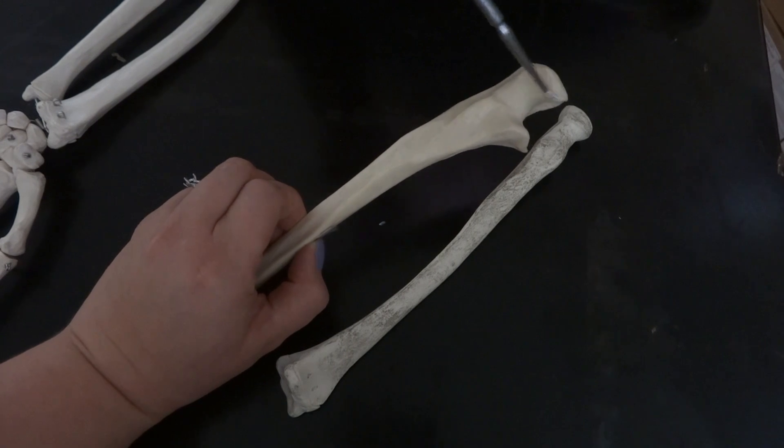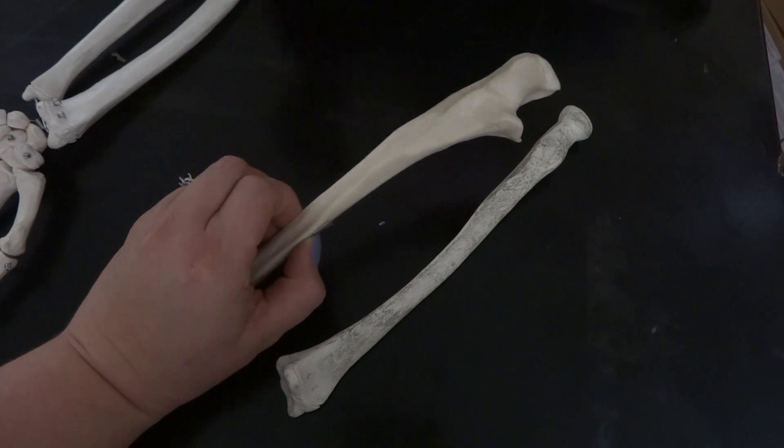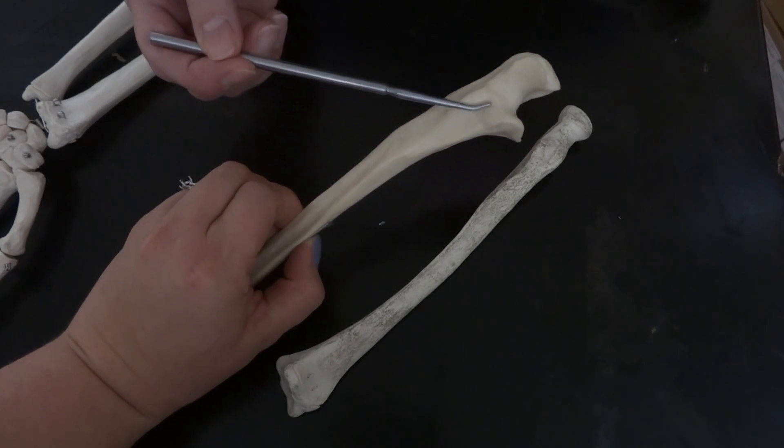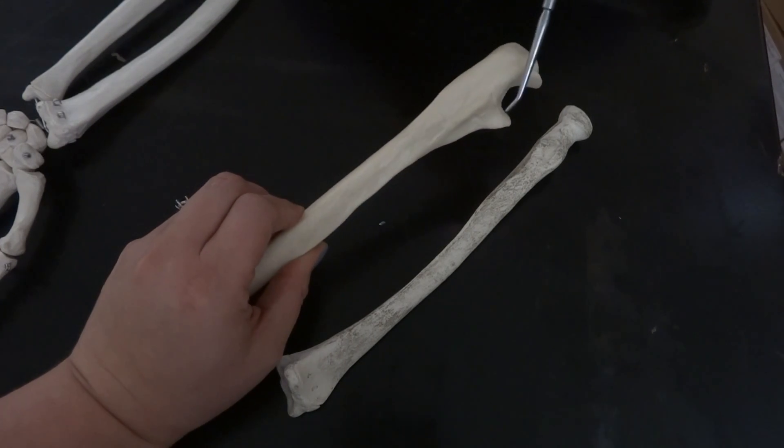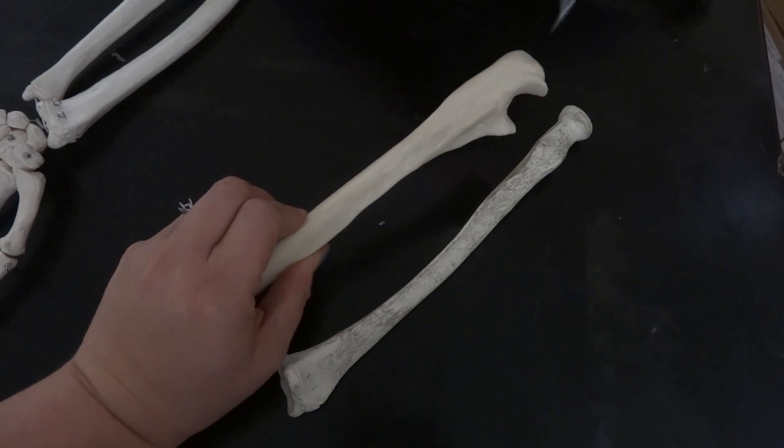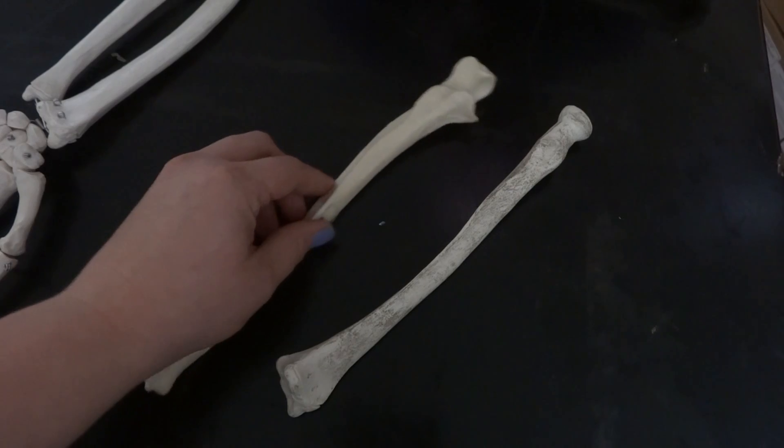And then the coronoid process, and then there's a little spot here where the radius is going to hit, which is called the radial notch, which right now is facing up. I'm going to try to turn it, see if you can actually see that notch. There you go, groovy shadows or something. High quality filming here. So those are the four that you need on the ulna.